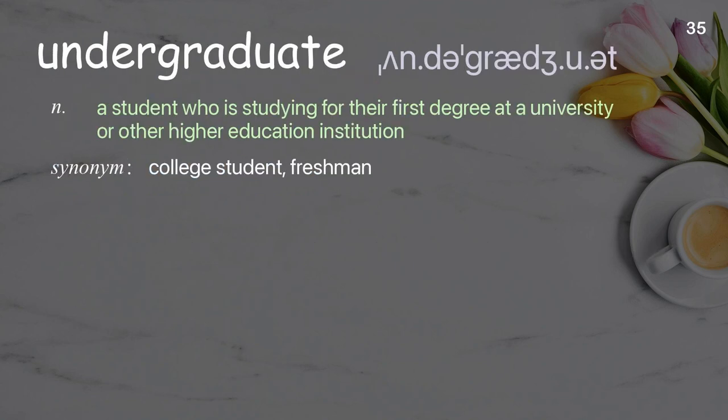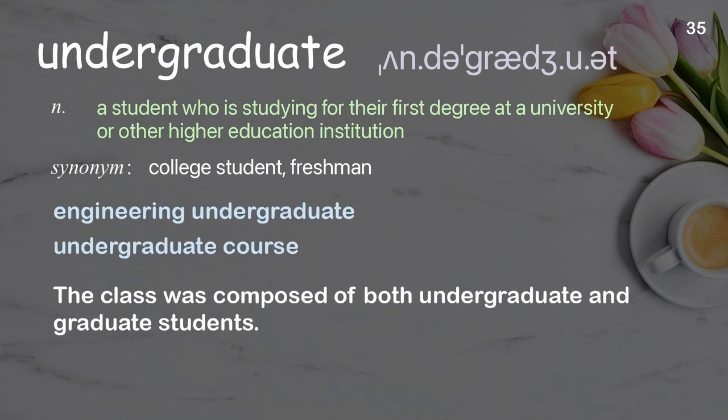Undergraduate: A student who is studying for their first degree at a university or other higher education institution. Examples: Engineering undergraduate. Undergraduate course. The class was composed of both undergraduate and graduate students.